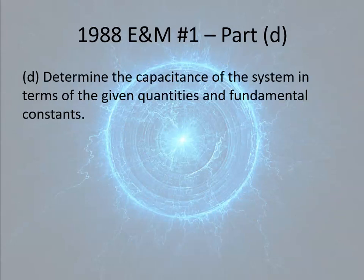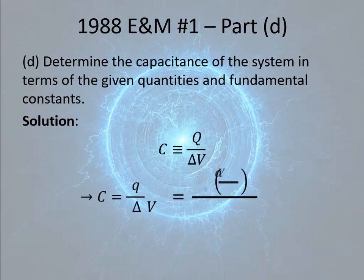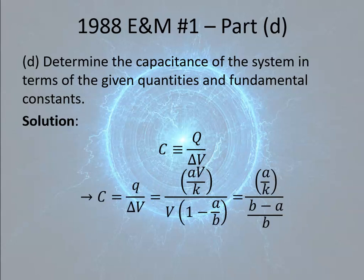Next, part D, determine the capacitance of the system in terms of the given quantities and fundamental constants. It always sounds like it's going to be hard when they're asking us to determine the capacitance of a system. Just use the definition of capacitance. The definition of capacitance is that capacitance is charge per unit voltage. So, we have a spherical capacitor. Start with the definition of capacitance, charge per unit voltage. That charge is just what we were calling little q, and that's AV over K. That potential difference is what we just calculated in part C, V times 1 minus A over B.